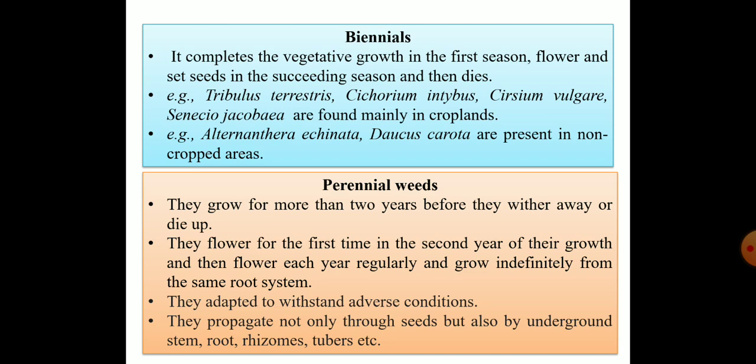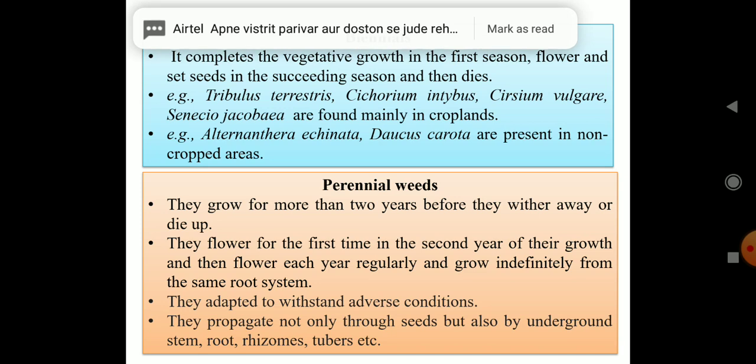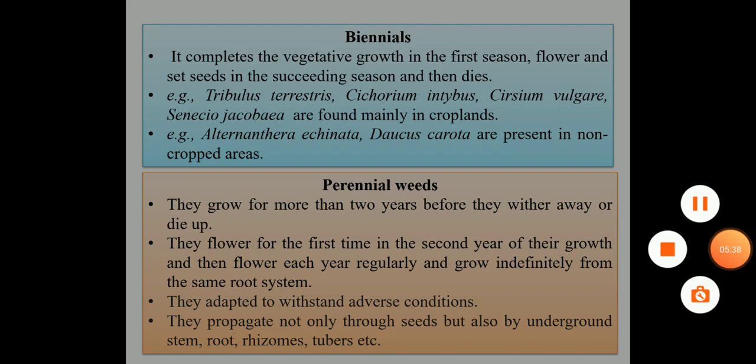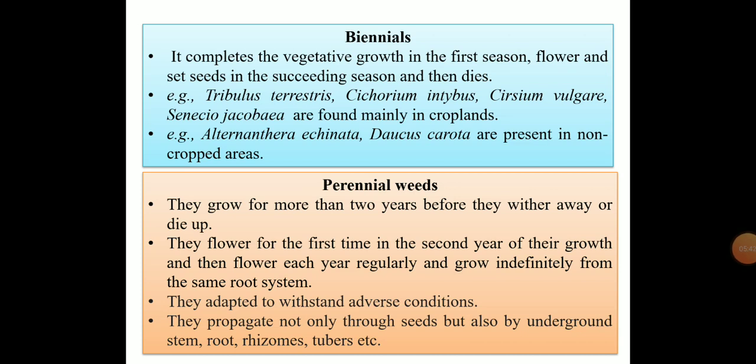Perennial weeds grow for more than two years before they wither away or die. They flower for the first time in the second year of growth and then flower each year regularly, growing indefinitely from the same root system. They are very adaptive and can withstand adverse climatic conditions. They propagate not only through seeds but also by underground stems, roots, rhizomes, tubers, and other vegetative parts.